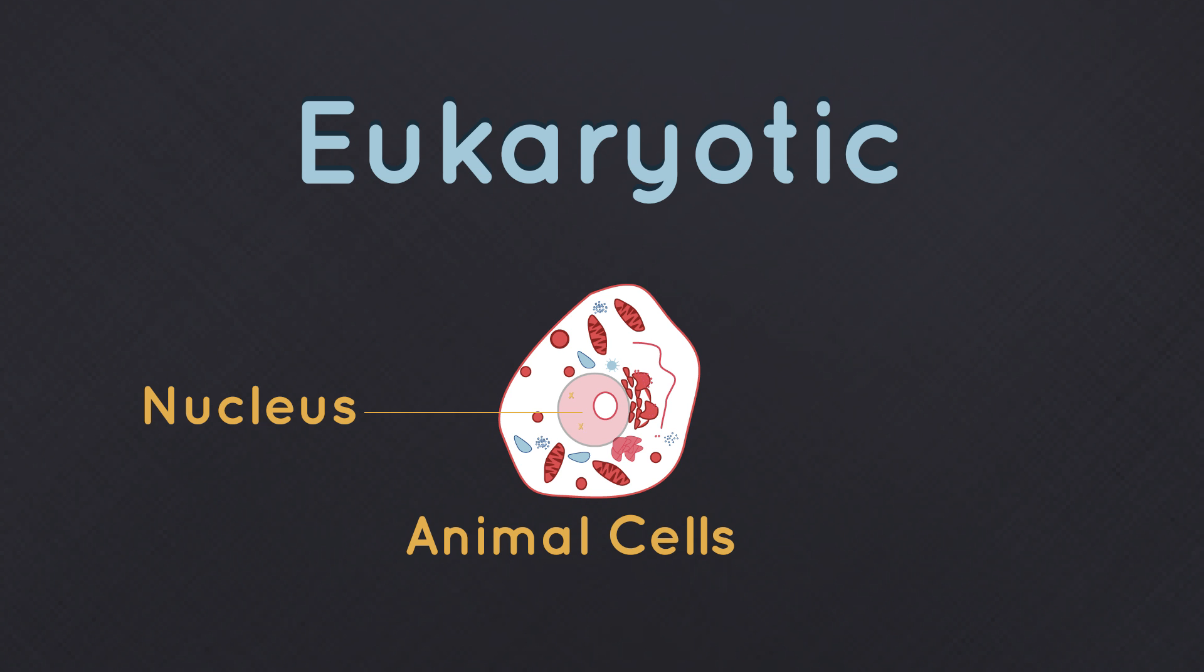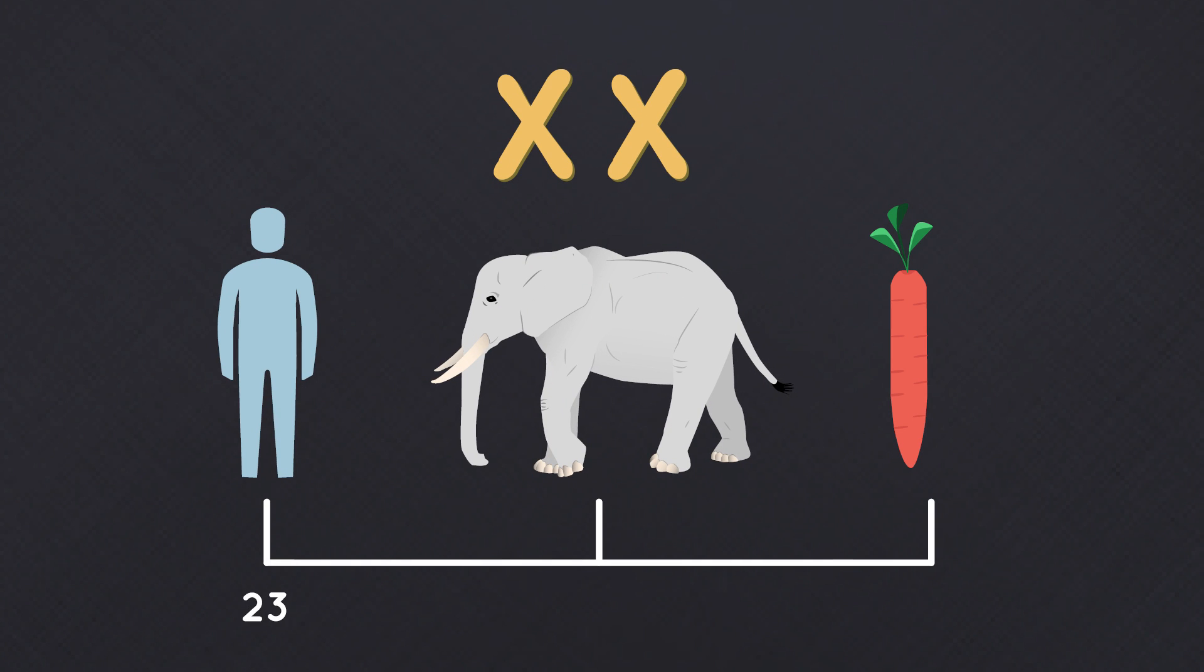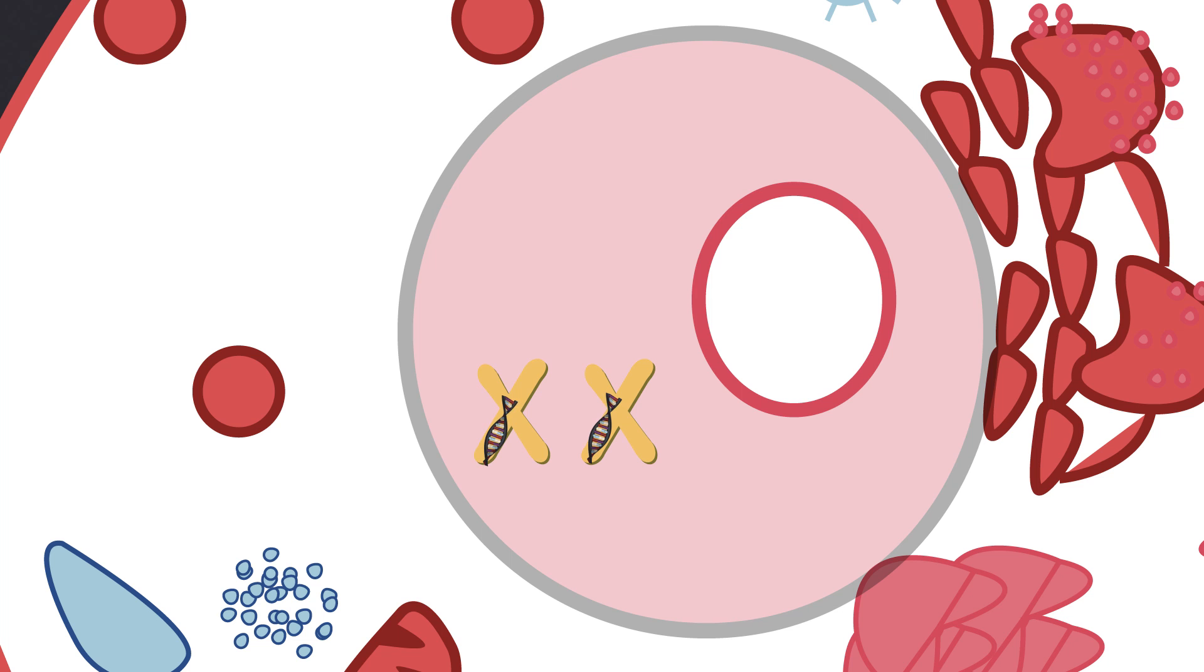Within most nuclei there are X-shaped chromosomes. Chromosomes occur in pairs but the number of chromosomes change depending upon the species. Humans have 23 pairs, elephants have 28 pairs and carrots have 9 pairs. DNA is found within these chromosomes.